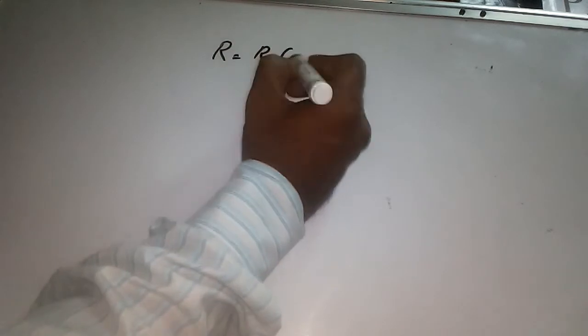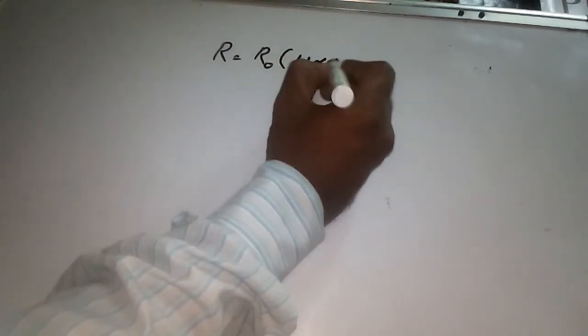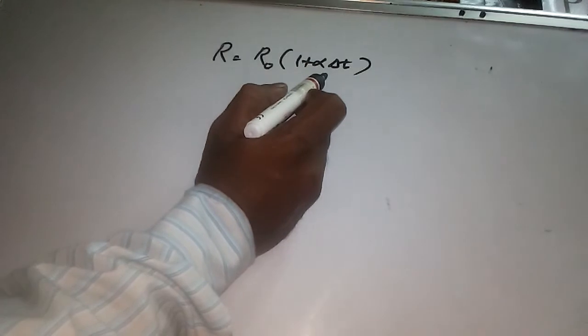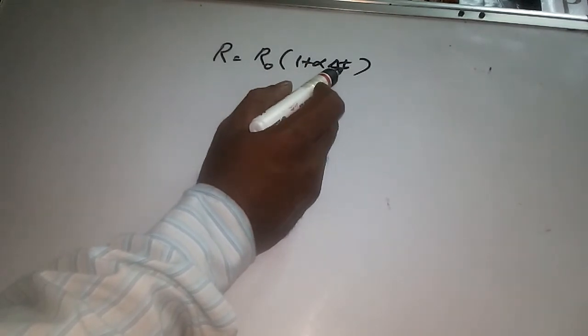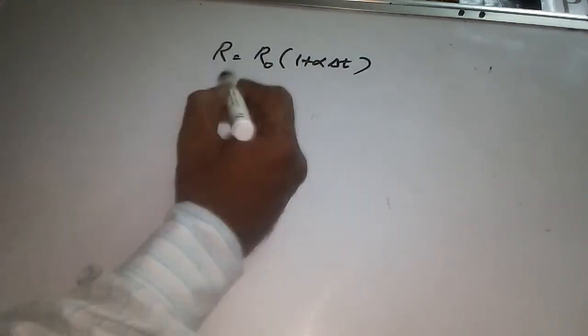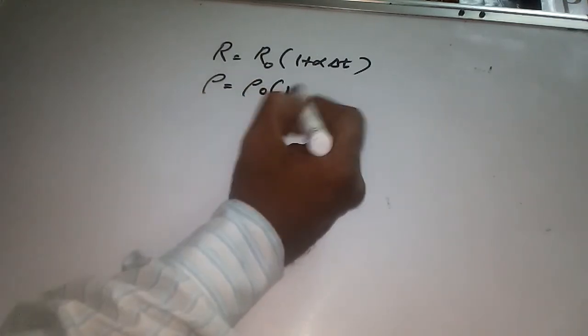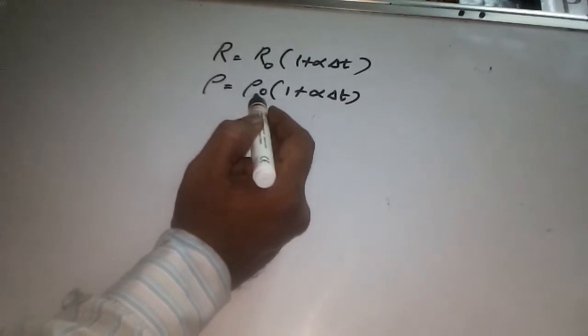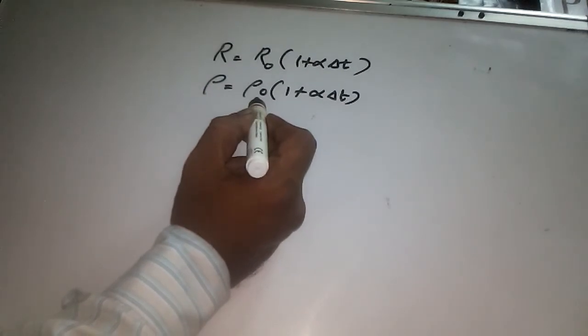We can see the temperature dependence of resistivity. Note that R equals R0 into 1 plus alpha delta T, where delta T is T2 minus T1, that is the change in temperature. Similarly, rho equals rho naught into 1 plus alpha delta T. This is resistivity where rho naught is resistivity at zero degrees Celsius.